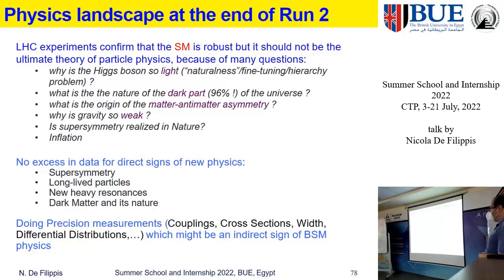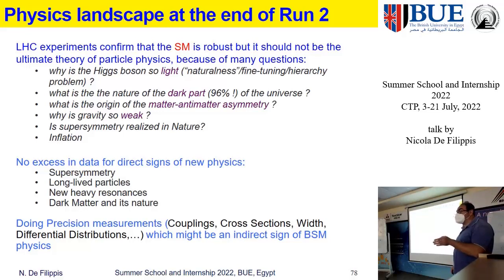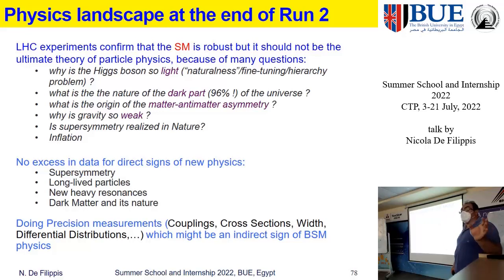At the same time, doing precision measurements can be an indirect sign of BSM physics. If we measure something which deviates from the prediction of the standard model, that could be a sign of new physics.